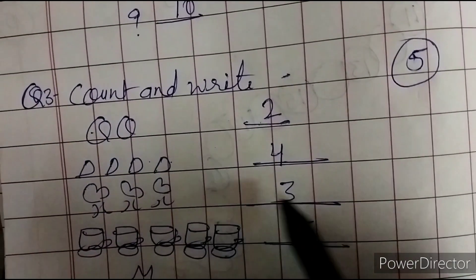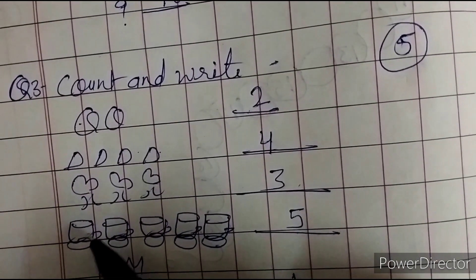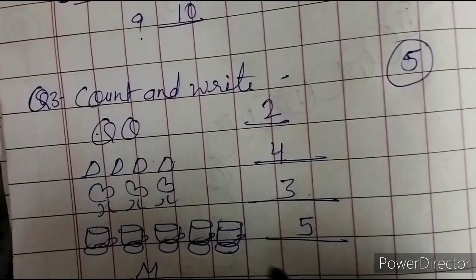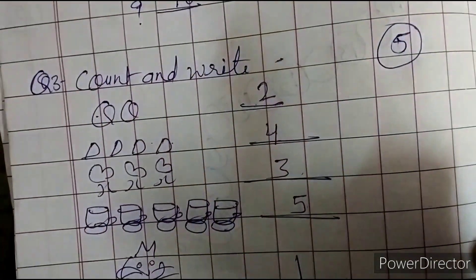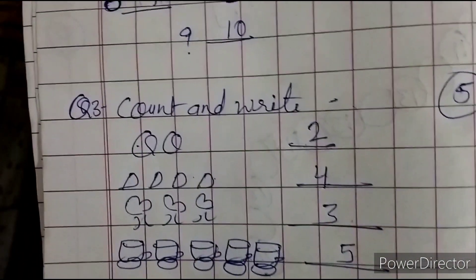So count and write. 1, 2, 3. So how many of these numbers are? 3. And then you count and write. 1, 2, 3, 4, 5. Here are 5. Okay? So count and write.